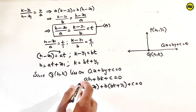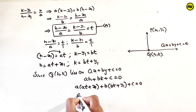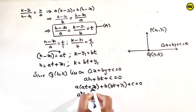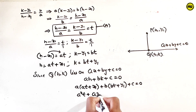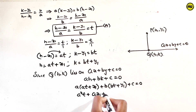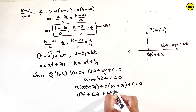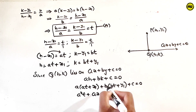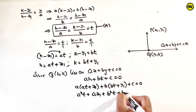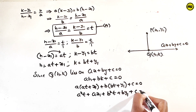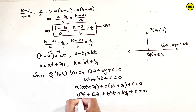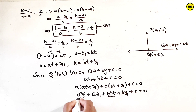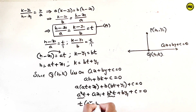Expanding: a into at gives a squared t, plus a into x1 gives ax1, plus b into bt gives b squared t, plus b into y1 gives by1, plus c equals 0. Taking t common from the squared terms: t(a squared plus b squared) plus ax1 plus by1 plus c equals 0.